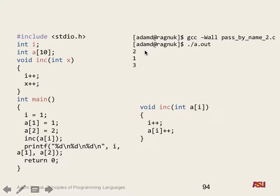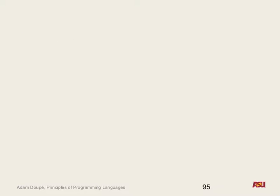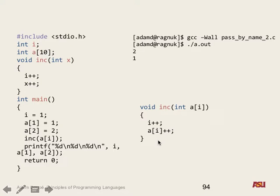What are some languages that use pass by name? At this point they're mostly historical. There's actually a good parallel between this and passing in functions and closures. You can simulate or emulate pass by name with pass by value and pass by reference. It can also be more efficient because you're not doing a whole function call - it's like an inline macro substitution.